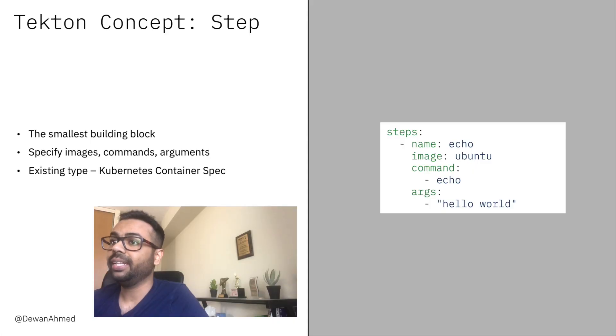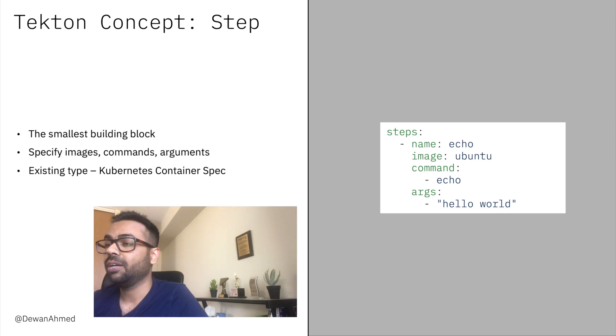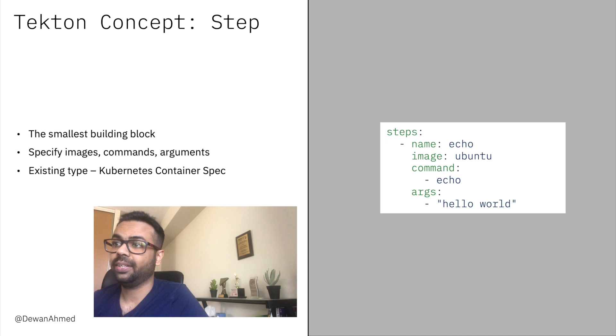Let's look at some of the Tekton concepts and examples. The first Tekton concept is a step. You can think of a step as the smallest building block for Tekton. In a step — which you can see as a portion of a YAML file on the right — you can specify an image, run a command, or take an argument. A step is an existing type, which is a Kubernetes container spec.